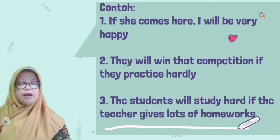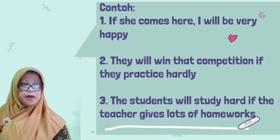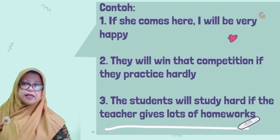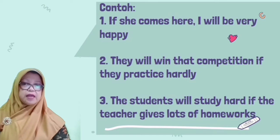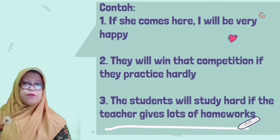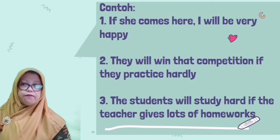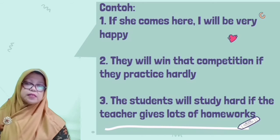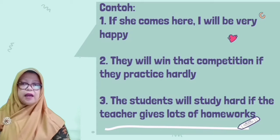Pengandaian tipe 1 berfungsi menyatakan kalimat pengandaian yang bisa terjadi jika syarat terpenuhi. Contoh pertama: 'If she comes here, I will be very happy' — Jika ia datang ke sini, saya akan sangat bahagia. Ada kemungkinan saya akan bahagia, syaratnya jika dia datang ke sini. Contoh kedua: 'They will win the competition if they practice hardly' — Mereka akan memenangkan perlombaan jika mereka berlatih dengan keras.